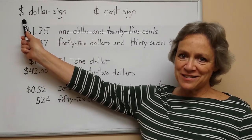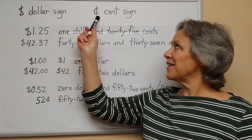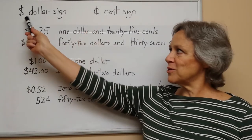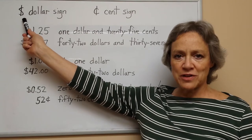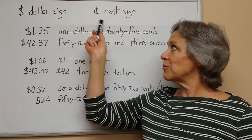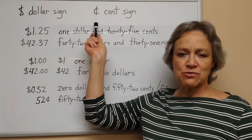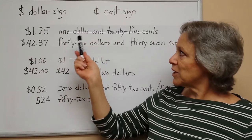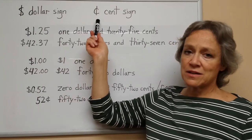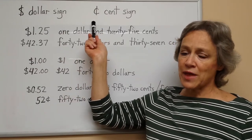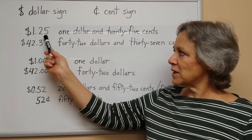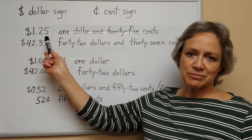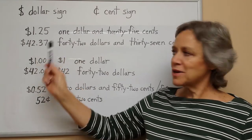This is a dollar sign and this is a cent sign. We use the dollar sign to represent the number of dollars and we use the cent sign to represent the number of cents. We can also represent the number of cents without the cent sign by using decimal digits with the dollar sign.